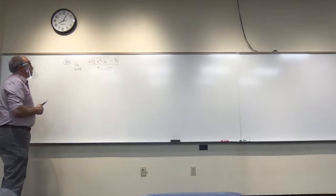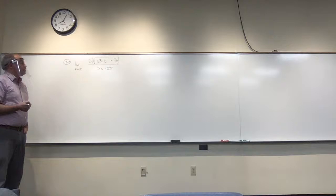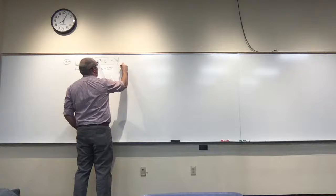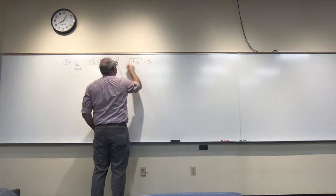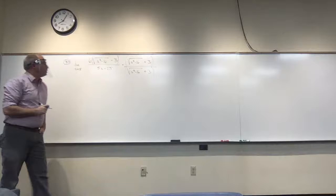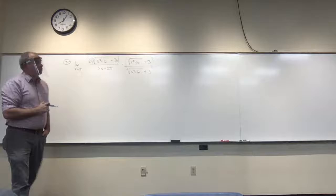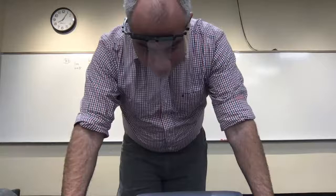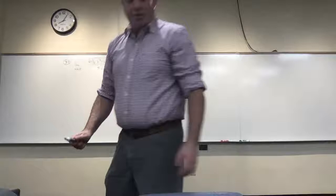Since we have this square root, that makes me think multiplying by a conjugate might be helpful. So what I want to do is multiply on top and bottom by the conjugate of the top piece — that is, the square root of x squared minus 16 plus 3 on top and bottom, which is really just multiplying by 1. A student notes there is a natural log in this problem, and that does change things a little bit.